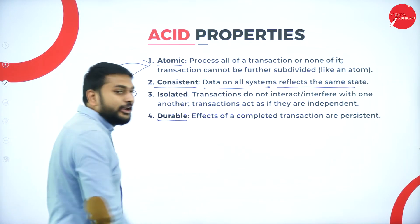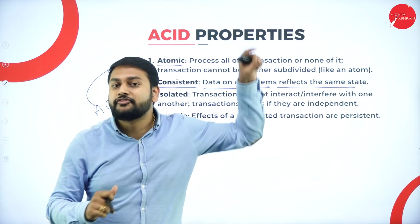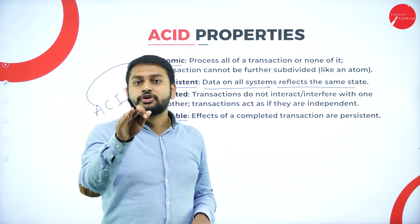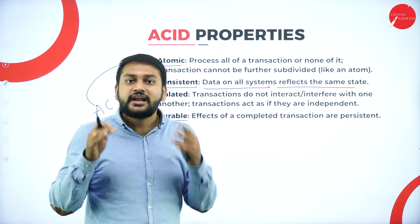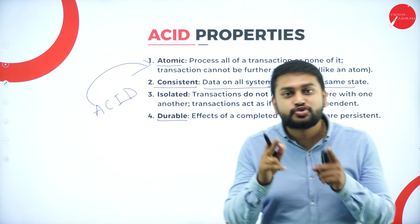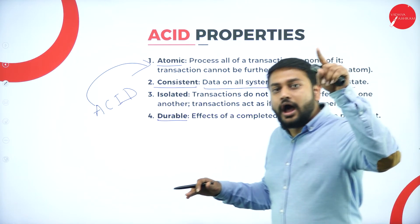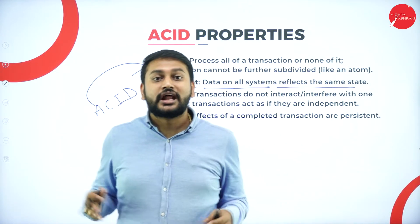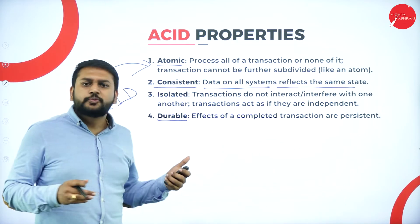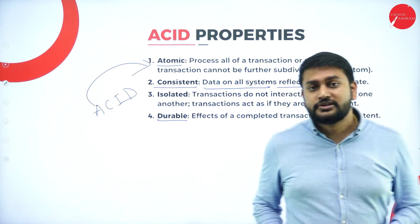The 'D' stands for Durable. Durable means even if there is any failure, whatever changes I have done to the data should still be there. The saved data should persist as-is even if we come across any failures. All these properties — Atomic, Consistent, Isolated, and Durable — should be present in every transaction. That is what we call the ACID property. This is an important topic and you can expect this for two marks.